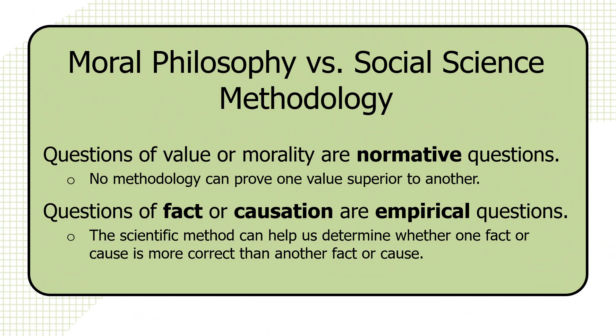To reemphasize the point: no methodology can prove one value superior to another. However, the scientific method can help us determine whether one factor cause is more correct than another. So the province we're dealing with in this book is the province of empirical questions — fact and the relationship between facts, or causation.